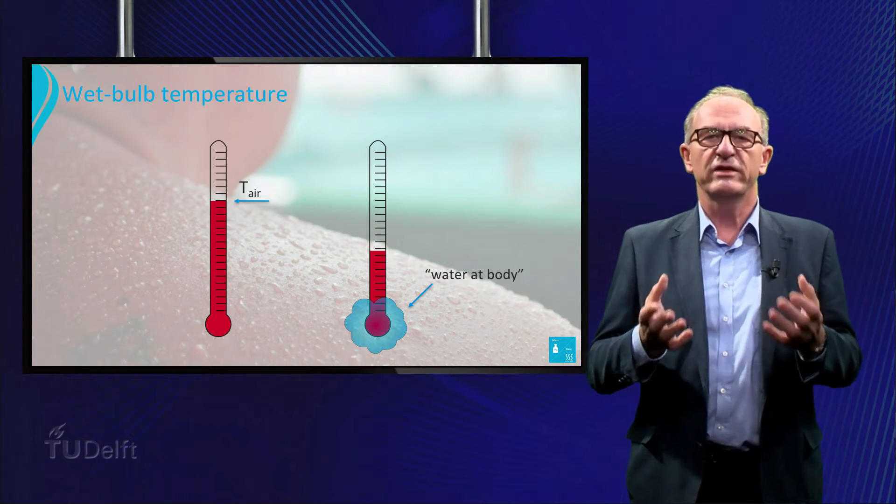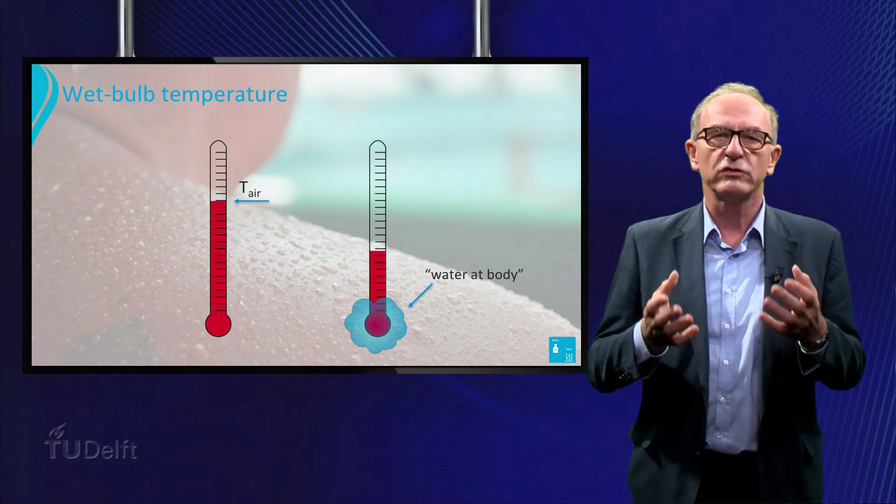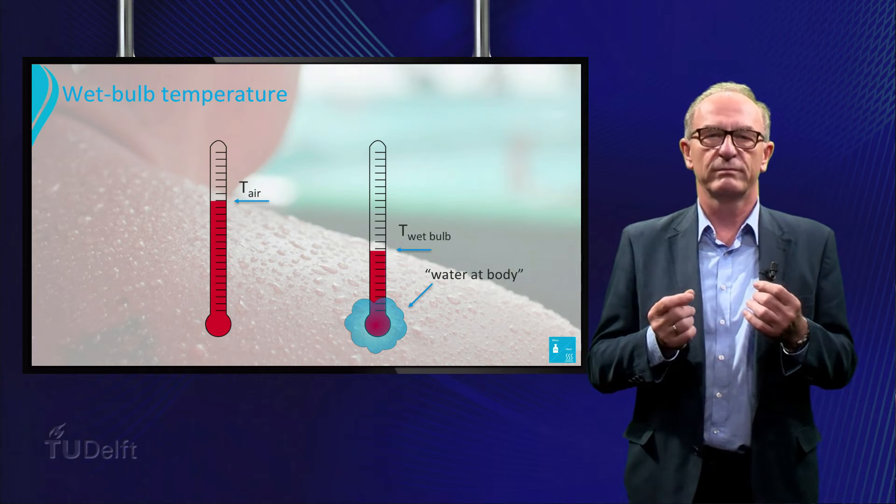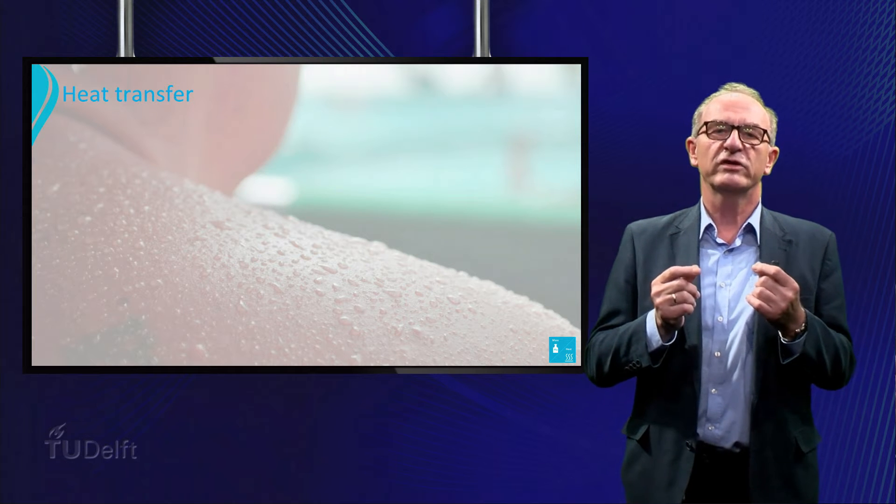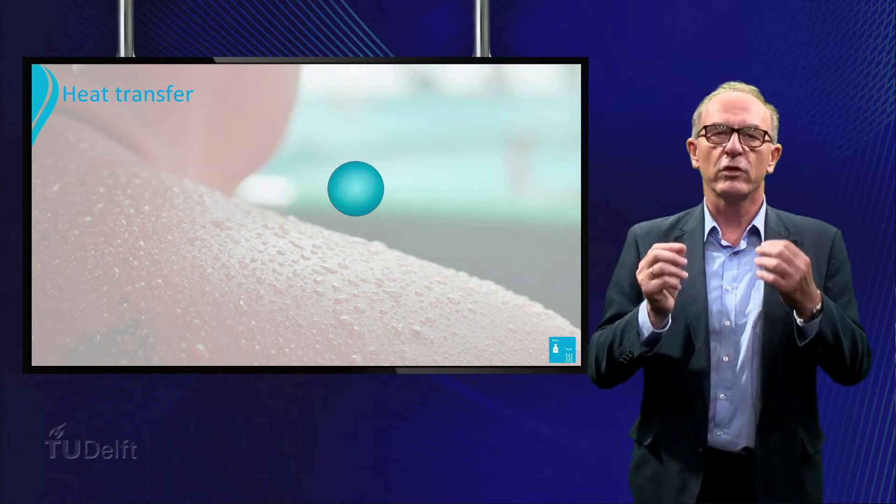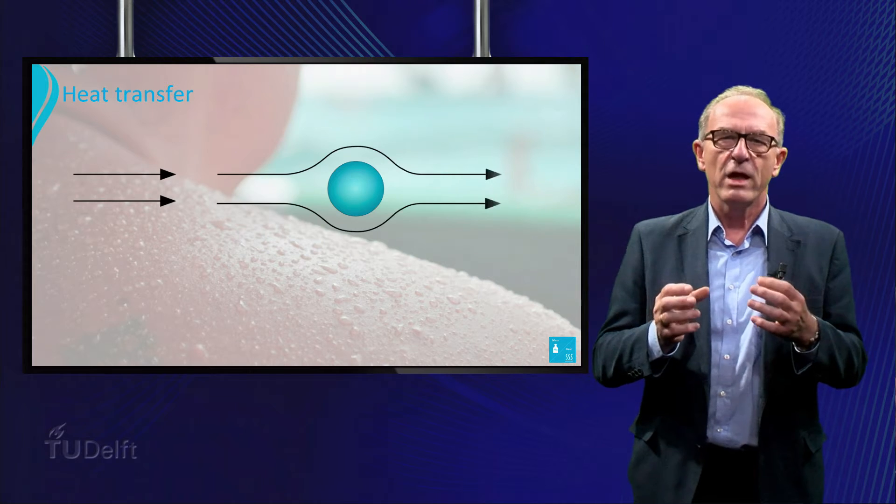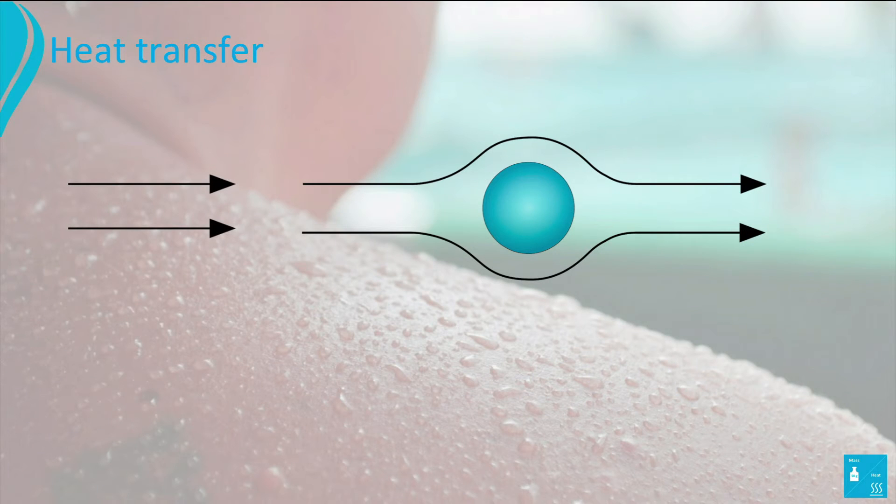The resulting steady-state temperature of the water droplet is called the wet-bulb temperature. Let's now look at how we can approach this evaporation process of a droplet in an airflow. We assume here that only a small amount is evaporated and that the diameter of the water droplet remains practically constant.